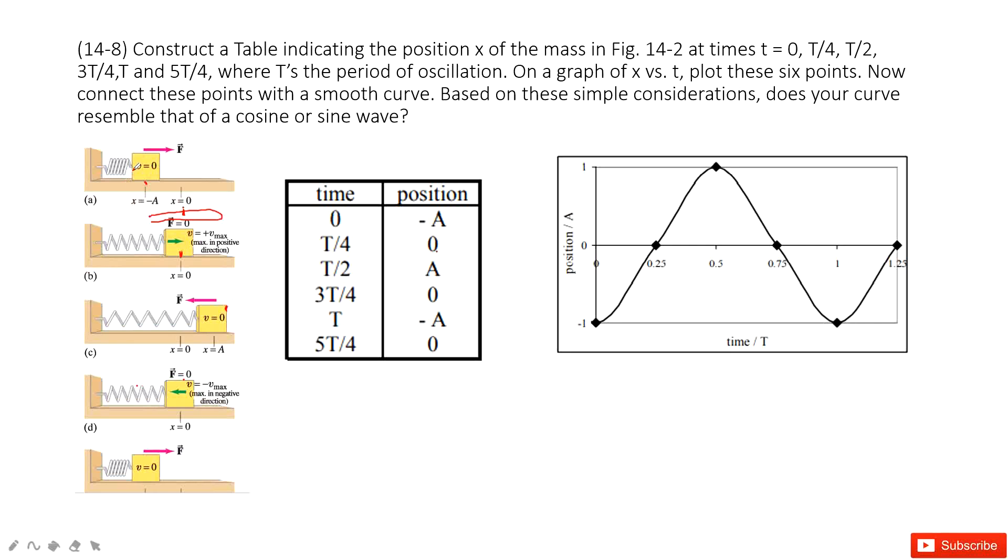So this object does simple harmonic oscillations. This is time, this is position. Then we can plot this x-t graph. The x-t graph is easy.